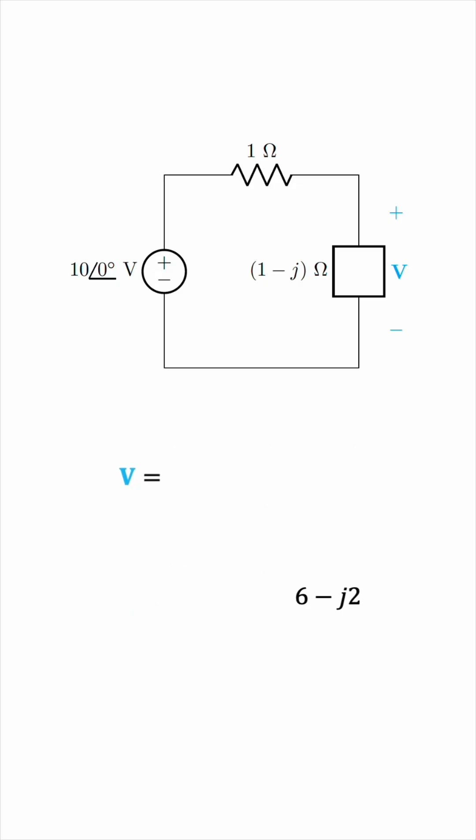It is now our objective to find the exponential form, the polar form, of this voltage. This will be 6.325 with a phase of negative 18.43 degrees. If you don't know how to get this, I recently posted a video on converting phasors to sinusoids and vice versa, so make sure to watch that video and this part will become clear to you.